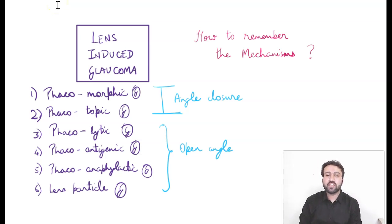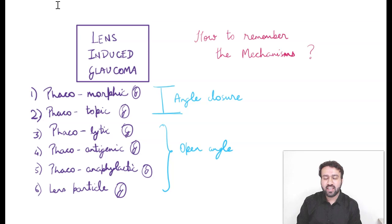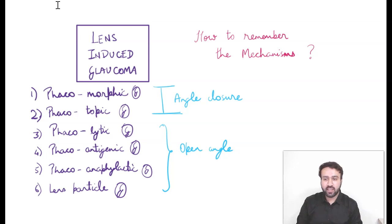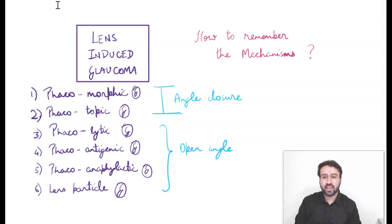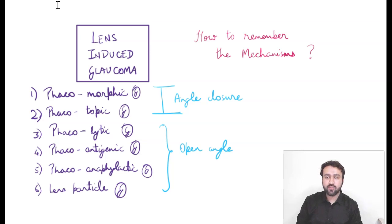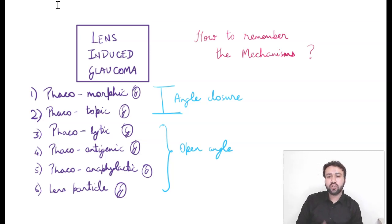Hi, today we are discussing the mechanisms of lens-induced glaucomas. Some of you asked in the telegram group that all these terms are so confusing and how to remember them — is there a trick, an easy way? Actually, the meaning and mechanism is contained in the root word itself. In this video I'll make it easy for you to understand all six terms, so you wouldn't even have to revise this topic — it will just come naturally to you.